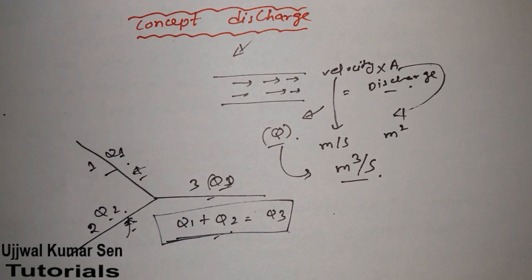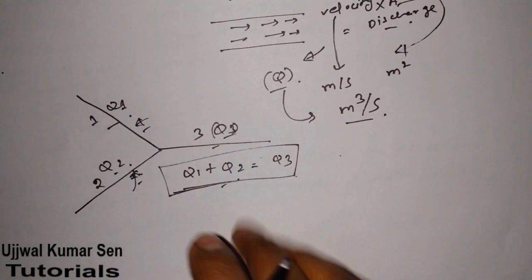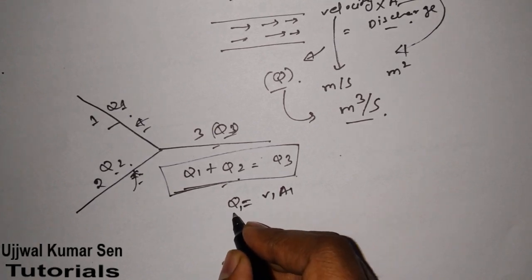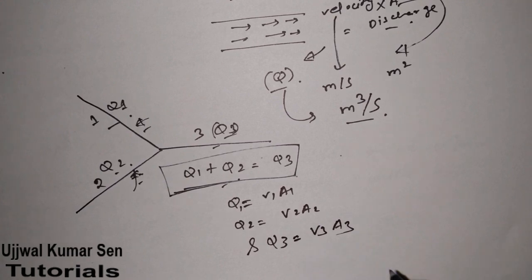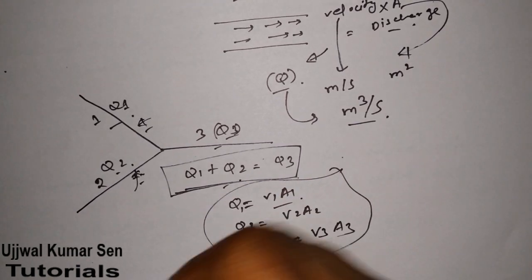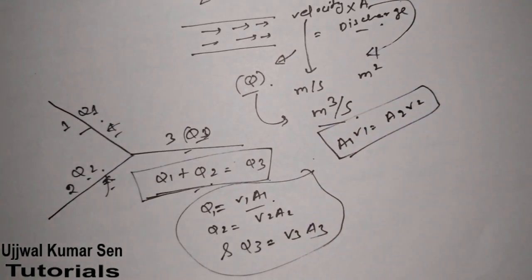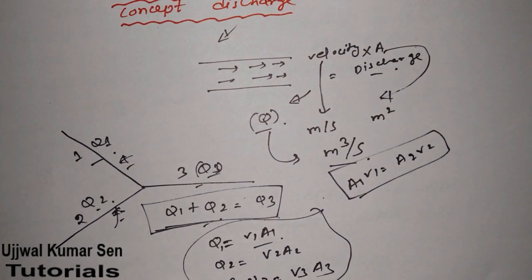Based on this concept of discharge, a question was asked in GATE previous year, which is why I am creating this video. The formula is Q1 = A1×V1, Q2 = A2×V2, and Q3 = A3×V3. You may also know the continuity equation A1×V1 = A2×V2 for incompressible fluids. For compressible fluids, it becomes rho1×A1×V1 = rho2×A2×V2. These are formulas you should know if preparing for GATE.